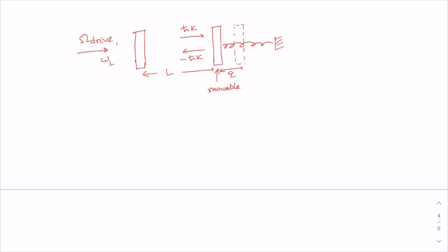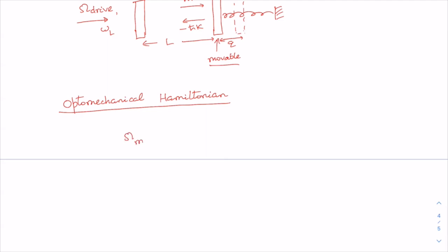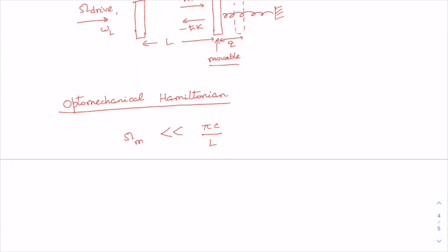Now let us discuss the optomechanical Hamiltonian more formally. We will assume that the motion of the movable mirror is very slow, and the mechanical oscillator frequency omega_m is much much smaller than the free spectral range, which is given as pi*c/l. This assumption will become clear shortly.